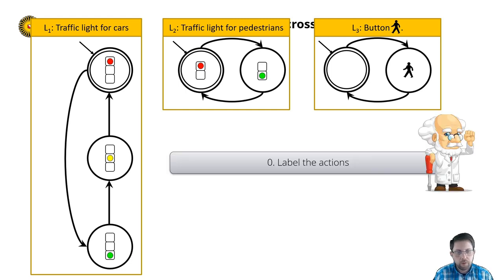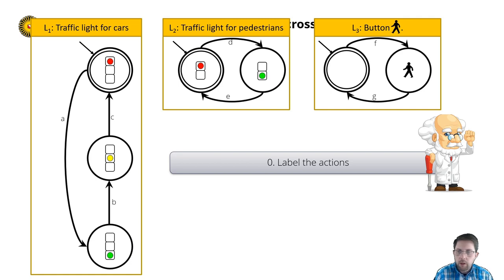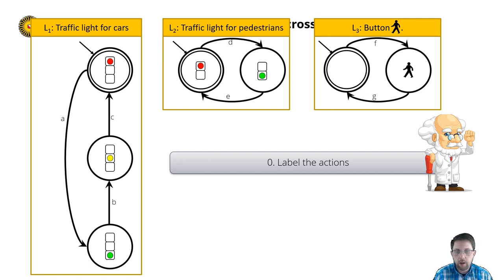In order to apply the synchronous product, we need to prepare the systems so that we can merge them. First, we label all the actions. In the traffic light for cars, we label the action to turn green A, to turn yellow B, etc. Similarly, we label the actions of the other LTSs with unique labels.